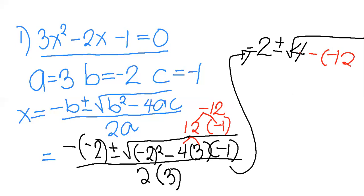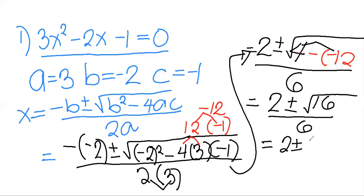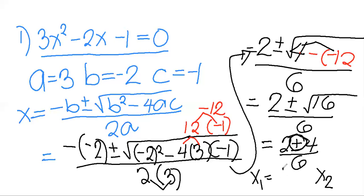So we have 2 times 3 equals 6, giving us all over 6. Simplifying further: 2 plus or minus the square root of 4 minus negative 12, which is positive 16, all over 6. The square root of 16 is 4. So we have 2 plus or minus 4, all over 6. For x₁: 2 plus 4 equals 6, divided by 6, which is 1.